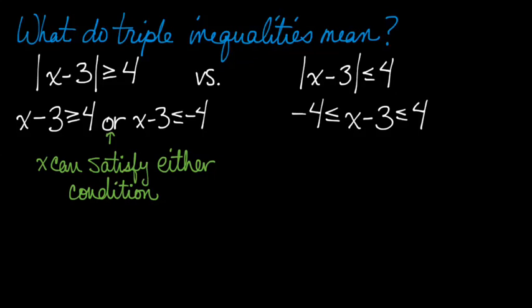We're saying that x is a number, right? Variables represent numbers. x can satisfy either one of these conditions. x minus 3 can be higher than 4 or lower than negative 4. It doesn't have to be both. In fact, it can't be both. It can be either condition.